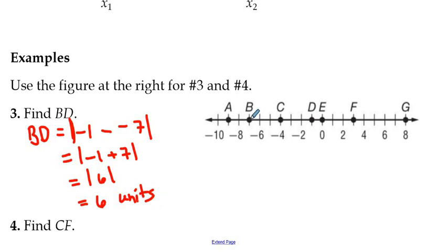And you could even check this if you really want to. You could check. If you move over, go from B and see how many units it is to D. We can go from B one, two, three, four, five, six units. And that's a quick check for that.